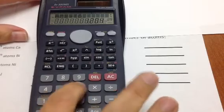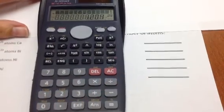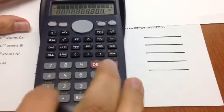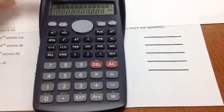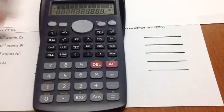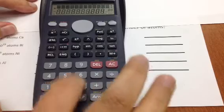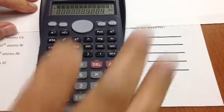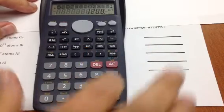Now I can hit divided by, remember those parentheses, parentheses 6.02 times 10, the little 'to the' button, that's this little caret right here, to the 23rd. And then I hit end parentheses and equal sign. And you can see that that is the number 2.